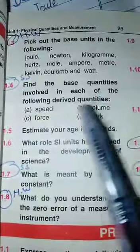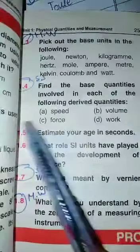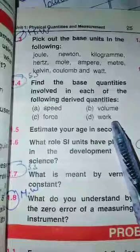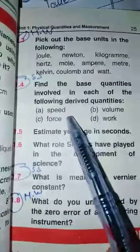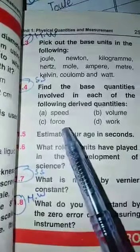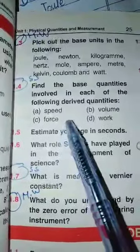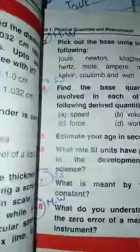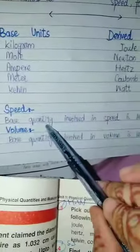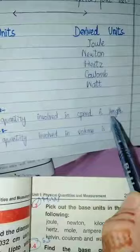Next question number 3: name 4 derived quantities. This is what we have to do. For speed, base quantity involved in speed is length and time. For volume, base quantity involved in volume is length.